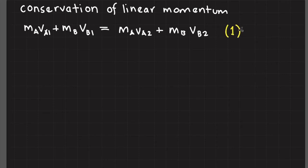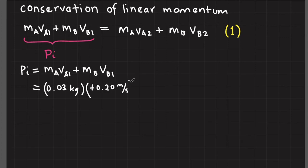Let's call this equation 1. Note that I can represent these terms as P sub i, which means initial total momentum because we can calculate this sum since all the values here are given. And it is equal to P sub i equals 0.001.